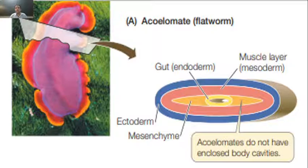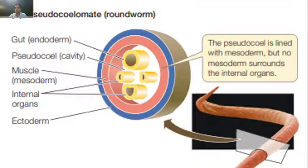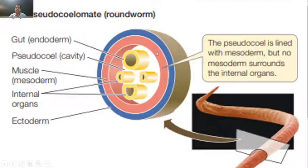Now we will summarize again. If we define coelom (Silom): coelom is a body cavity which is lined by mesoderm. In pseudocoelomates, the cavity is not lined by mesoderm on both sides — mesoderm is present only on one side. Here we can see that it is only the mesoderm on one side lining the cavity.